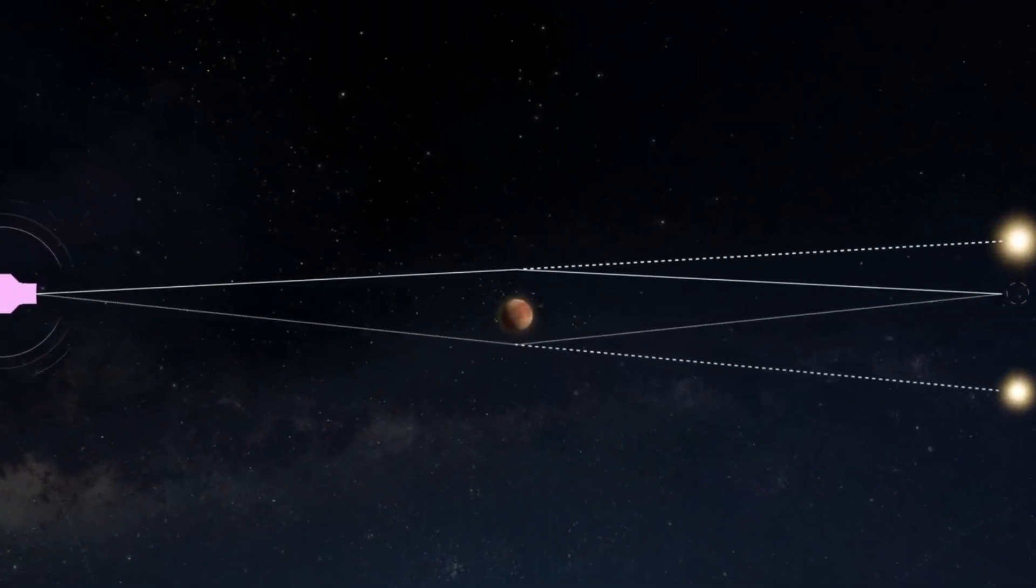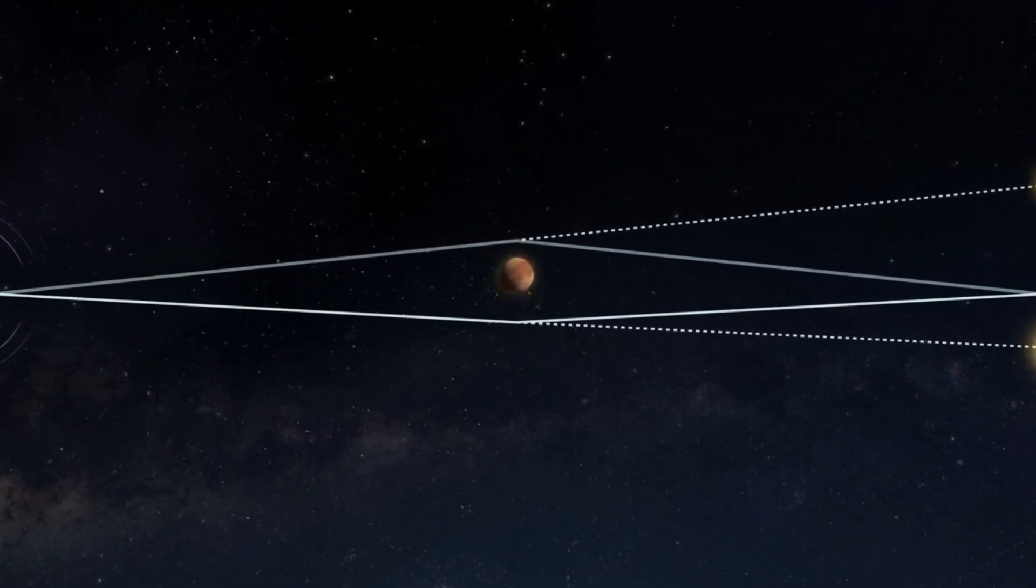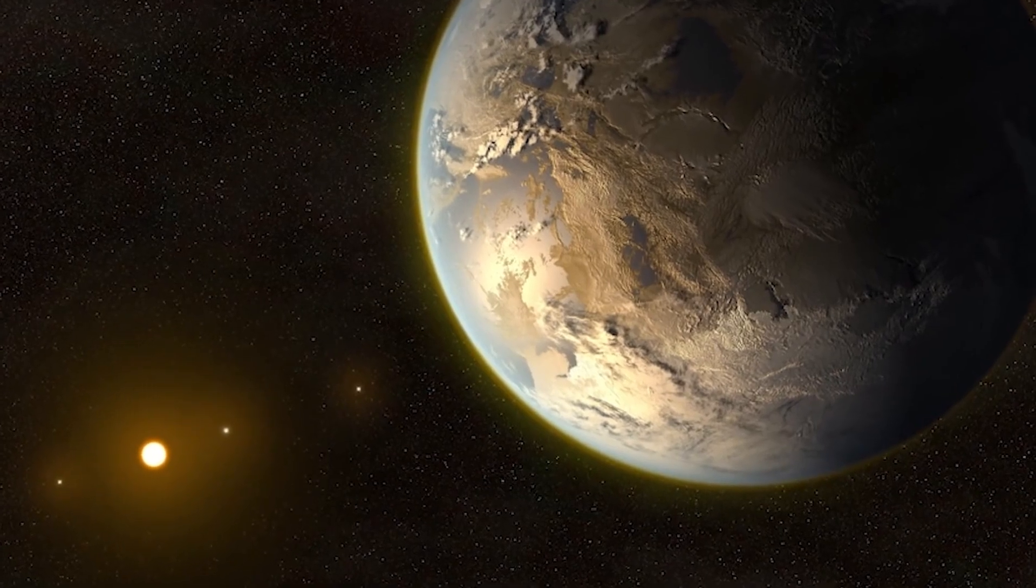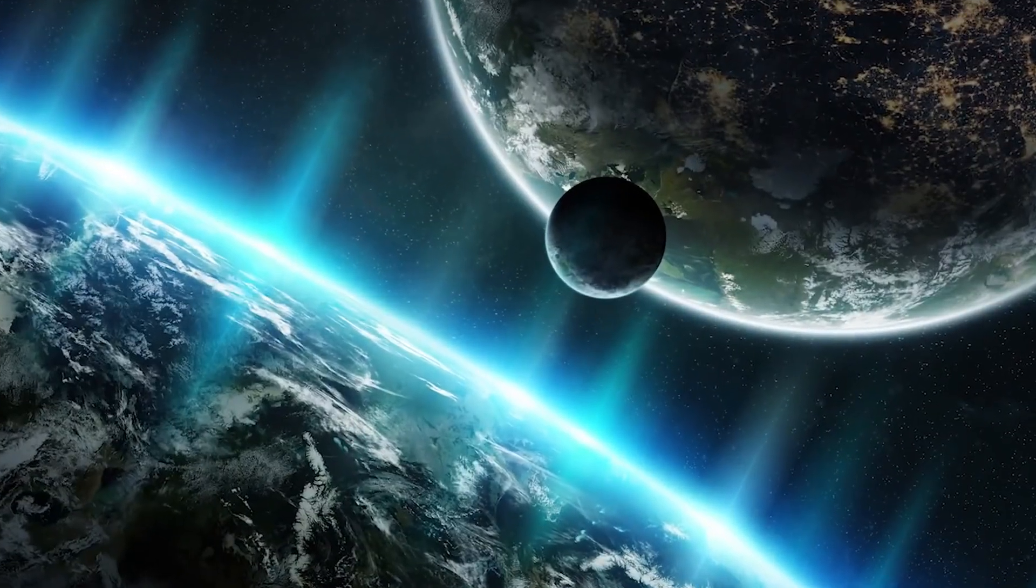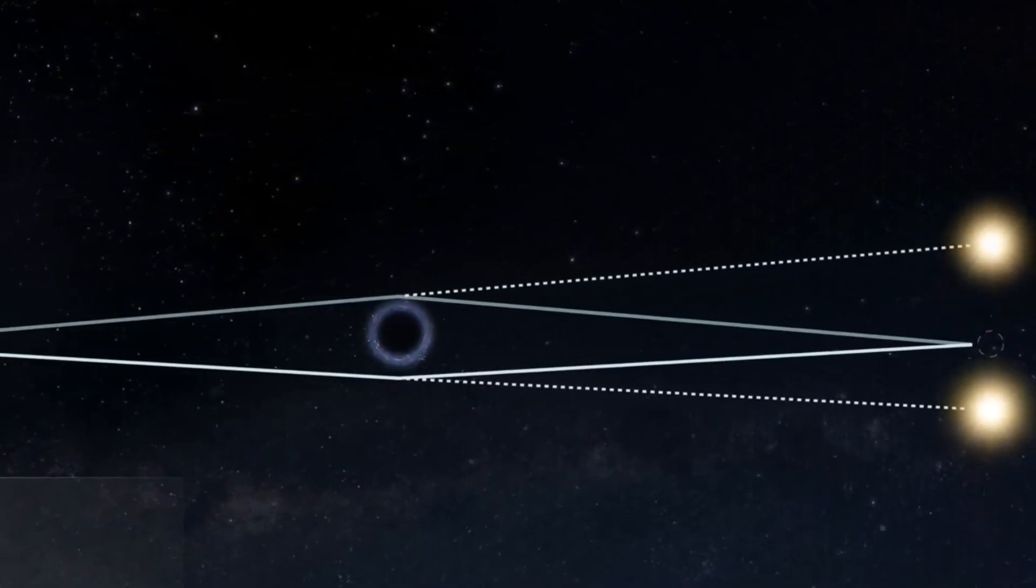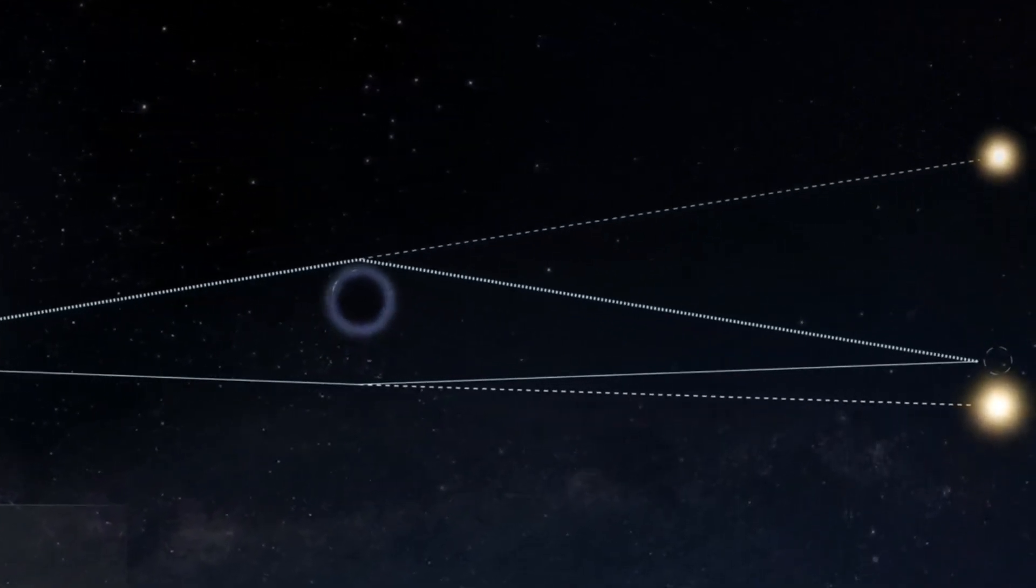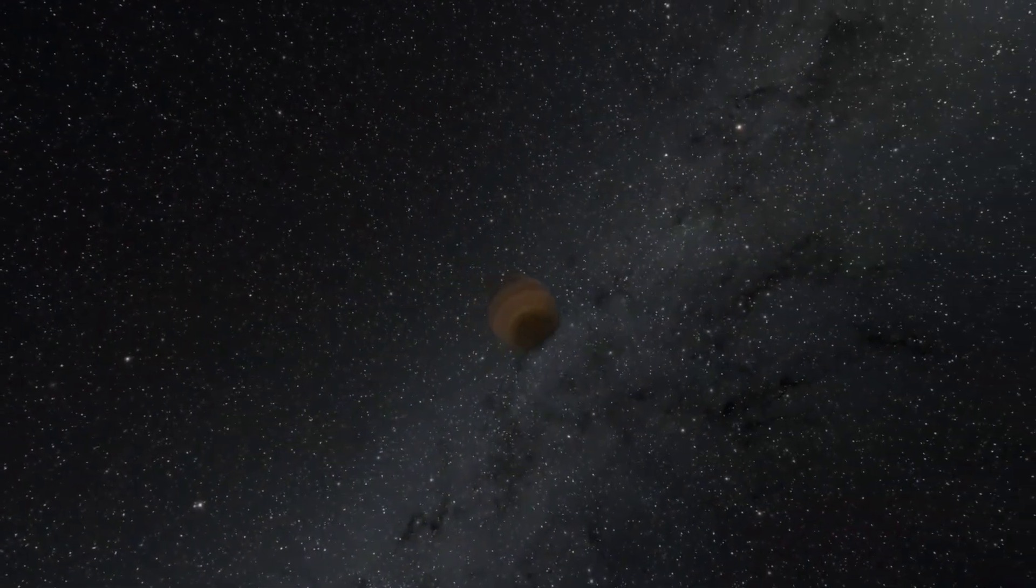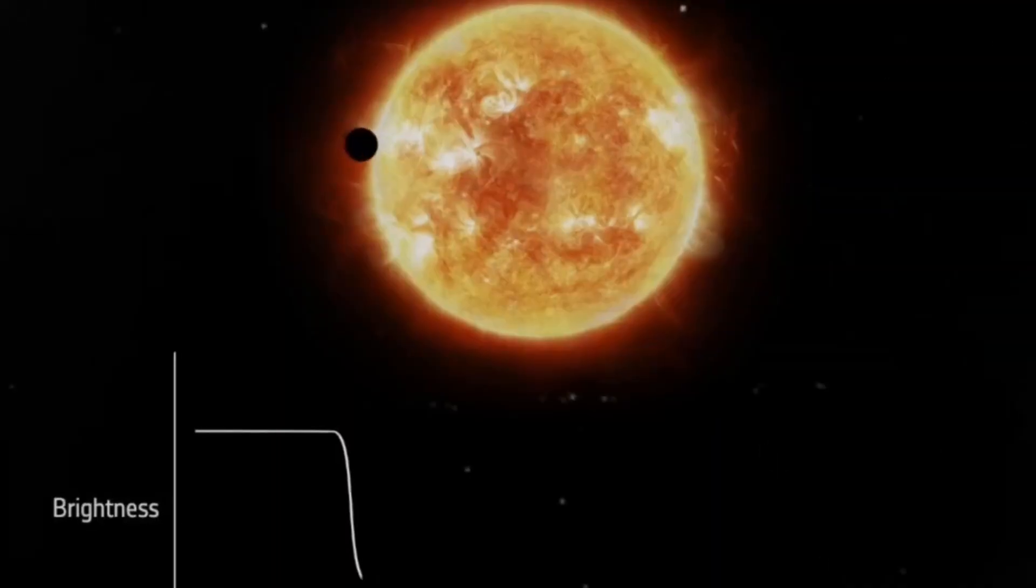Microlensing has revolutionized the discovery of such systems, allowing astronomers to detect planets around faint, distant, or non-luminous objects like black holes, something that traditional methods like transit or radial velocity techniques struggle to achieve. This technique was crucial in identifying the intriguing white dwarf system we're discussing.